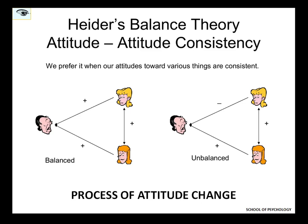Let us understand what is the state of balance and the state of imbalance. A state of imbalance is found when all three sides of the triangle — P, O, and X — are all negative, or when two sides are positive and one is negative. Balance is found when all three sides are positive, or when two sides are negative and one side is positive.